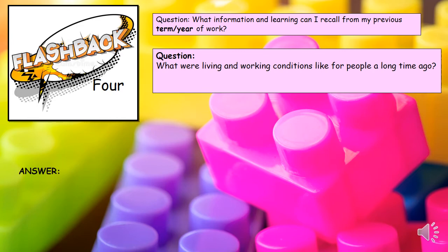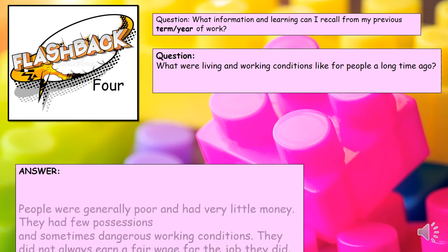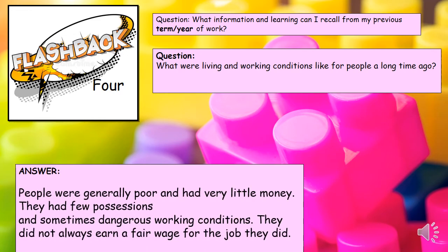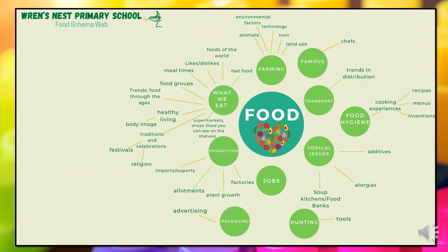What information and learning can you recall from last term? We talked about the living conditions and working conditions of the people during the Great Fire of London. What were the living and working conditions like for people a long time ago? People were generally poor and had very little money. They had few possessions and sometimes dangerous working conditions, and did not always earn a fair wage for the job they did. Throughout all of our curriculum subjects, we have our schemas running through them. During curriculum, we will be looking at transport — how the cocoa bean gets transported from Ghana to Britain.